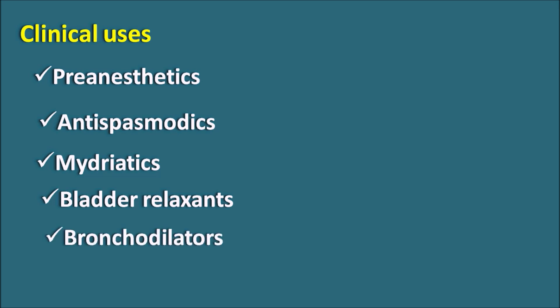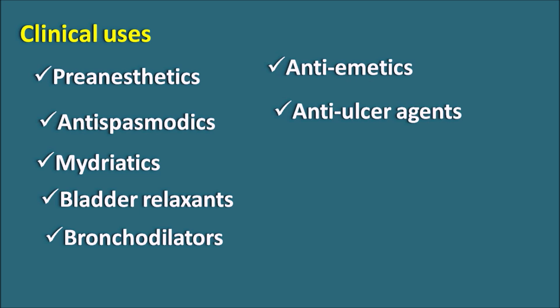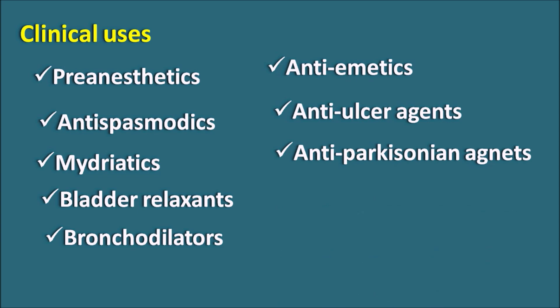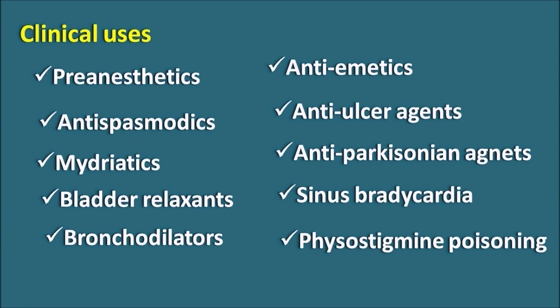As bronchodilators in the treatment of COPD — ipratropium and tiotropium. As antiemetics — hyoscine is used in the treatment of motion sickness. As anti-ulcer agents — glycopyrrolate, propantheline, and pirenzepine. As anti-parkinsonian agents — benzhexol and benzotropine. For treatment of sinus bradycardia — atropine. Also for physostigmine poisoning: physostigmine is an acetylcholinesterase inhibitor that increases acetylcholine levels, increasing muscarinic actions, and atropine is used to treat this poisoning.